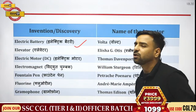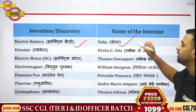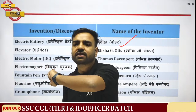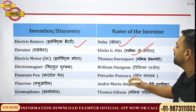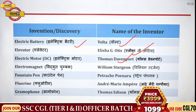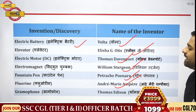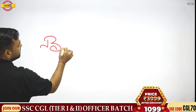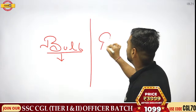Talking about the electric battery: whenever we think of battery, we think of voltage, and from voltage comes Volta — so the electric battery was invented by Volta. Then elevator — seen in malls and railway stations — it was discovered by Elisha Otis. DC electric motor was invented by Thomas. Electromagnet was discovered by William Sturgeon. Then fountain pen — Petarke. Fluorine — Andry. Gramophone — Thomas Edison.